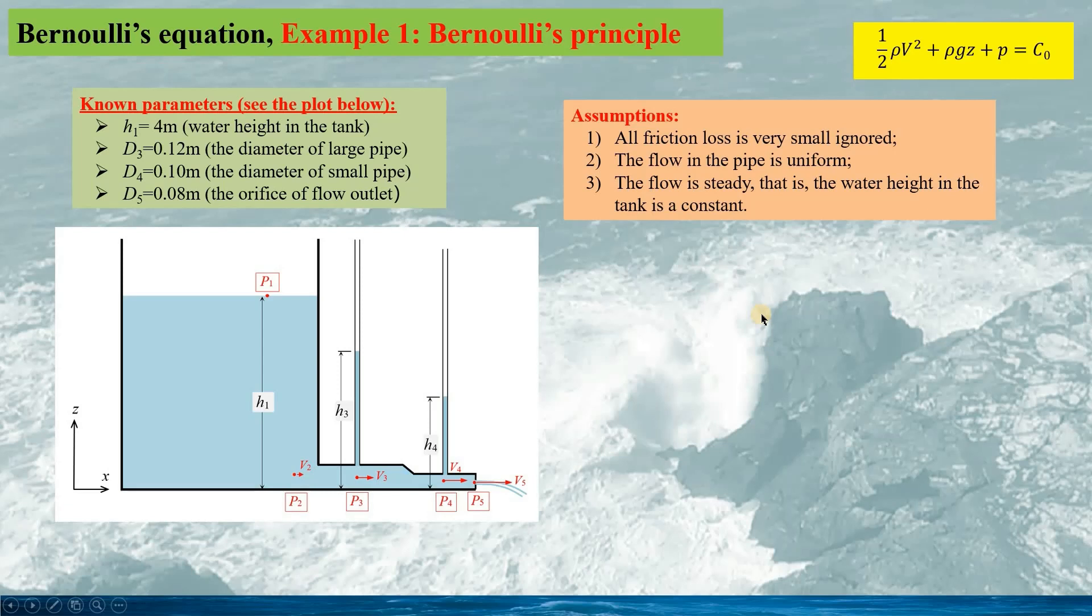To carry out the calculation, we assume all friction loss is small and ignored, and this can be acceptable if the flow speed is not very high. The flow in the pipes are uniform, and this is also acceptable if the measurement points are away from the sudden change for the pipe flow. The flow is steady, hence we assume the water height in the tank is a constant.